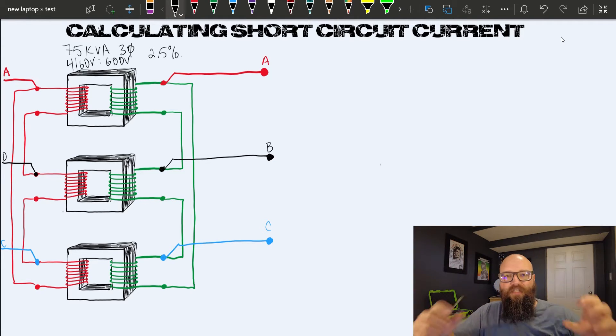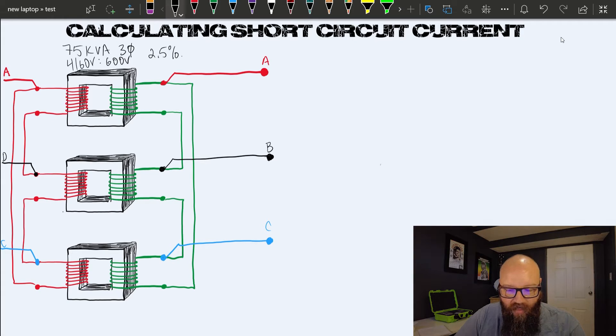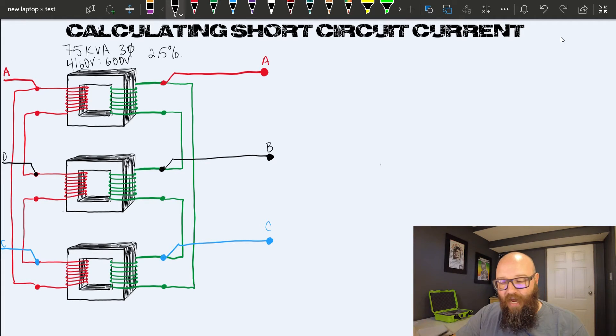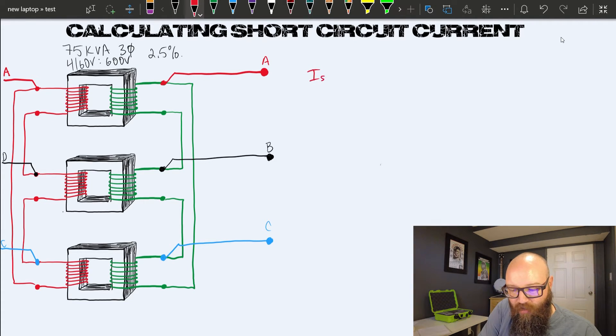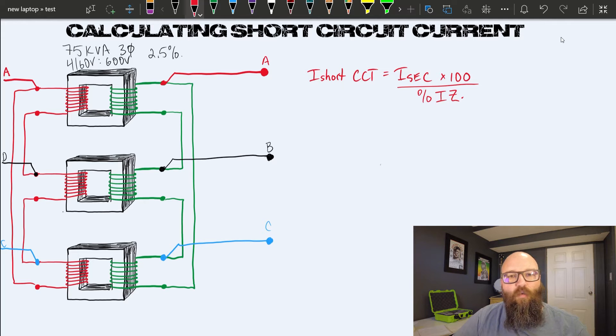Imagine this is one box with three single-phase transformers inside. We have our ABC terminals here. We're not going to focus too much on the transformer theory, but we want to calculate the short circuit current available from this system. We're going to look at our same formula: I short circuit equals I secondary times 100 divided by percent IZ. In this case, we need to know the I line secondary, and it's simple to determine using the same formula we used before.